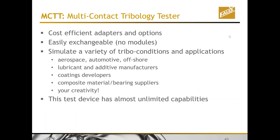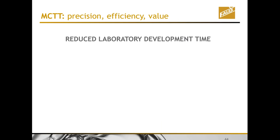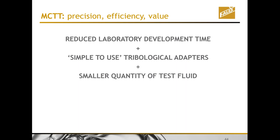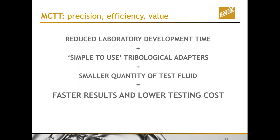The MCTT uses cost-efficient adapters and options that are easily interchangeable. We do not use complex modules. One key benefit of adapters is that each time you change and replace an adapter, it goes back to the exact same place, increasing repeatability and reproducibility. We can simulate a wide variety of tribological conditions and applications for many different industries. And above all, your creativity: this machine is the perfect tool to get meaningful test results. It has almost unlimited capabilities, precision, efficiency, and value. Reduced laboratory development time, plus simple adapters, plus smaller quantity of test fluid, equals faster results and lower testing costs. It is available now.